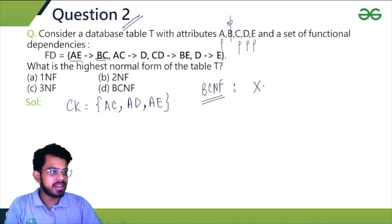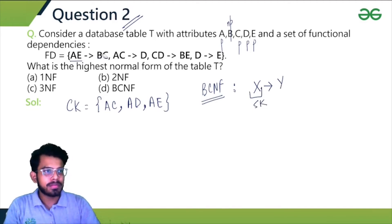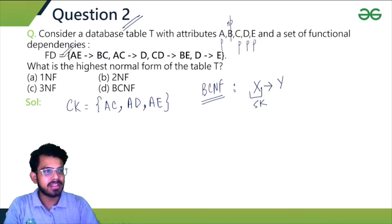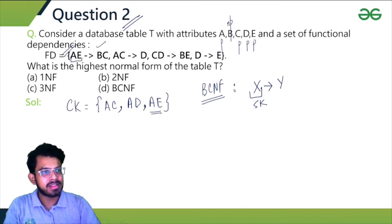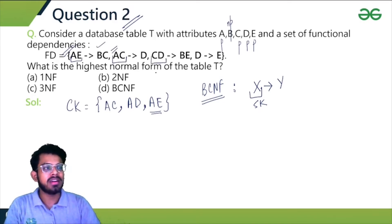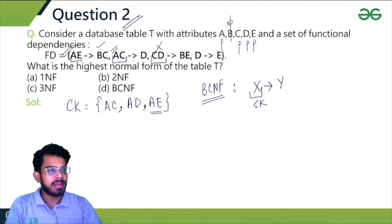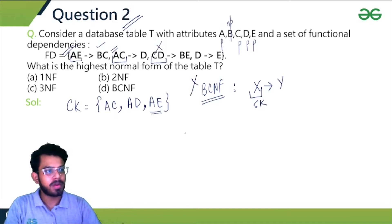Let's check for BCNF. For BCNF, for any non-trivial functional dependency X to Y, X must be a super key. The first FD has A on the LHS — A is a candidate key and hence a super key, so it satisfies BCNF. The second FD has AC on the LHS — AC is also a super key, so this is fine. But the third FD has CD on the LHS — CD is not a super key, so it doesn't satisfy BCNF. The relation is not in BCNF.